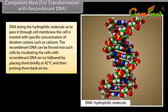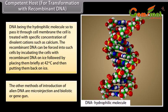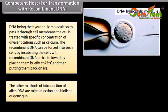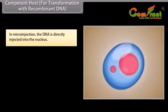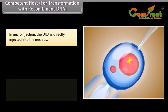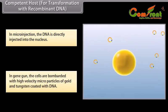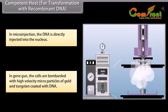Competent host for transformation with recombinant DNA. Since DNA is a hydrophilic molecule, to pass it through the cell membrane the cell is treated with a specific concentration of divalent cations such as calcium. The recombinant DNA can be forced into such cells by incubating on ice, followed by placing briefly at 42 degrees Celsius, then putting them back on ice. Other methods of introduction of alien DNA are microinjection and biolistics or gene gun. In microinjection, the DNA is directly injected into the nucleus, and in the gene gun, cells are bombarded with high-velocity microparticles of gold and tungsten coated with DNA.